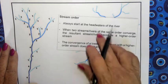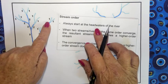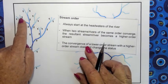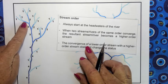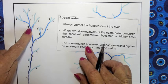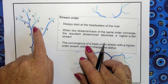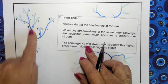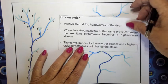Let's look at number one — we always start at the headwaters. When two streams of the same order converge, for example two order-1 streams become a 2, and where two order-2 streams converge they become a 3. But when a 2 converges with a 3, it stays stream order 3 — that's the third point.